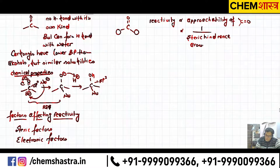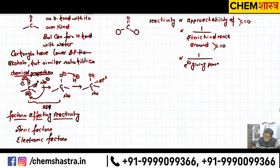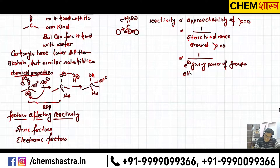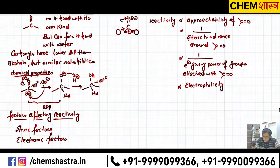We want smaller groups — no large groups attached. Second factor: reactivity is inversely proportional to the electron-giving power of groups attached. If electron-donating groups are attached near C=O, the delta positive on carbon decreases, reducing the electrophilicity. So the nucleophile's chances of attacking are reduced. Therefore, reactivity is directly proportional to the electrophilicity of C=O — the delta positive charge on carbon.